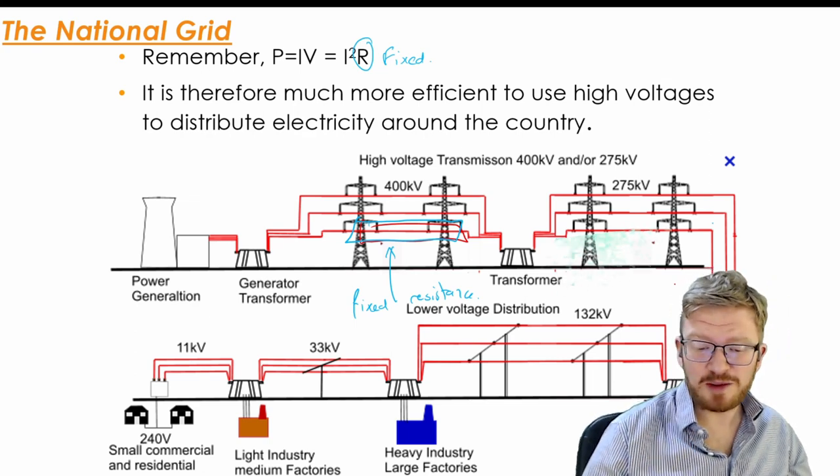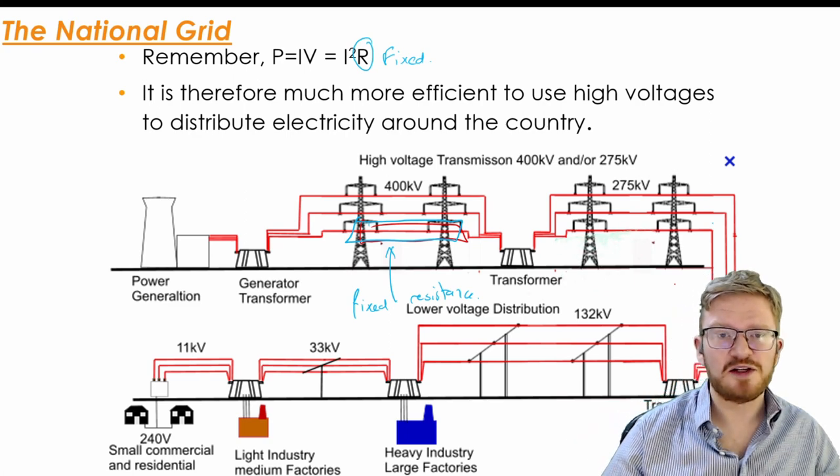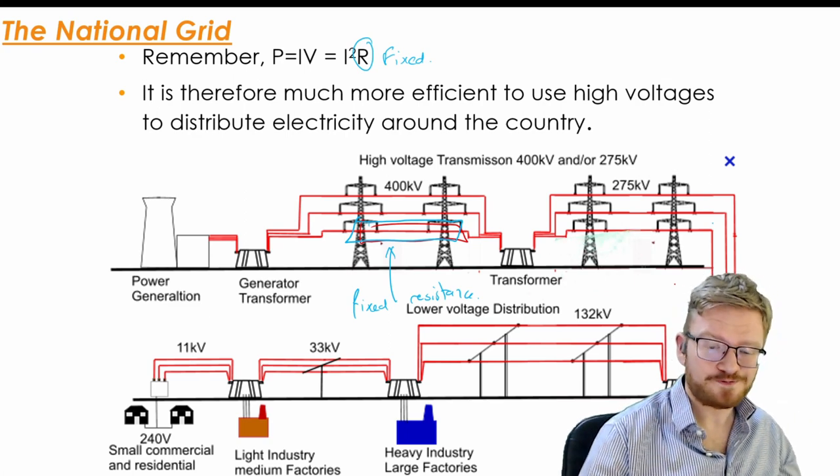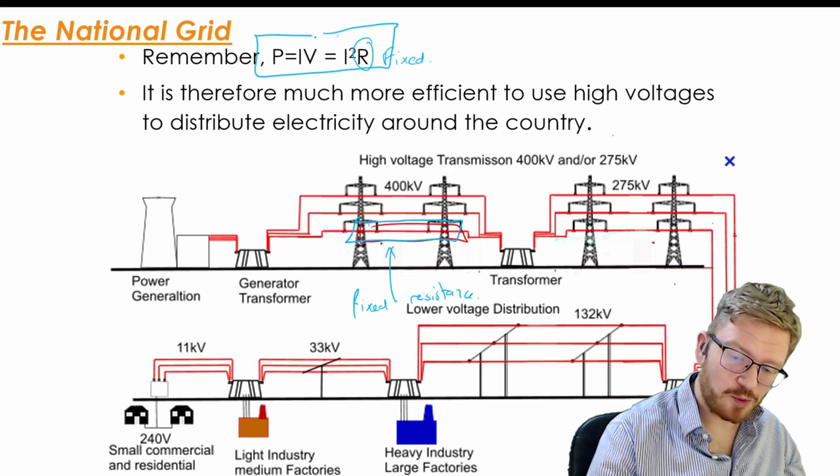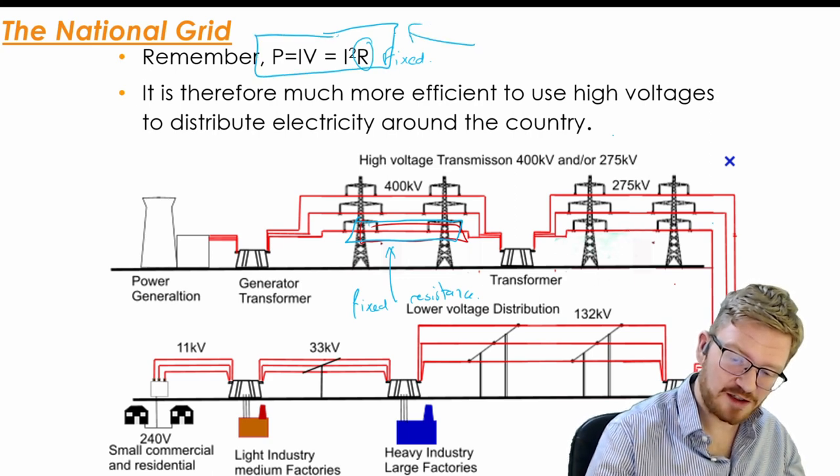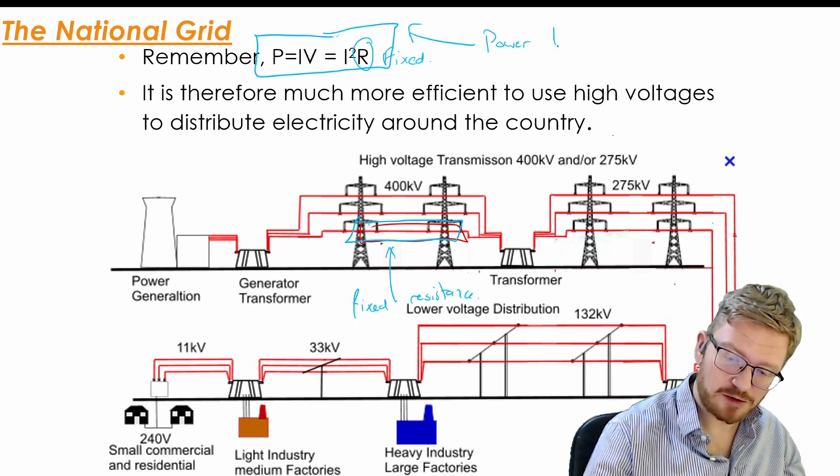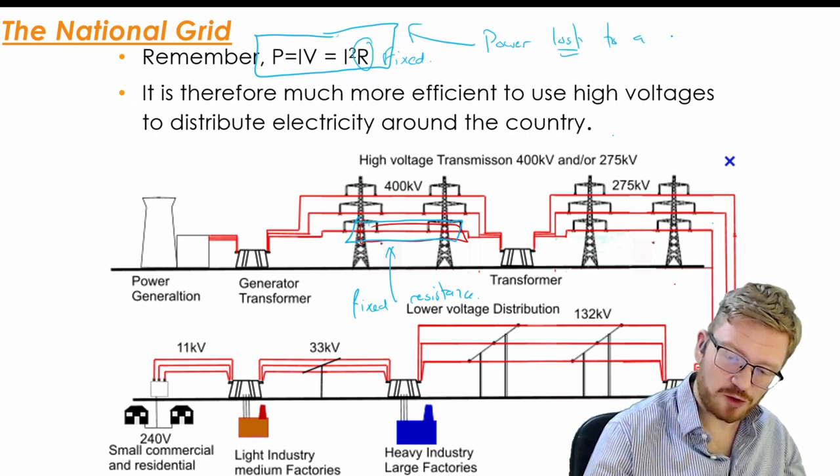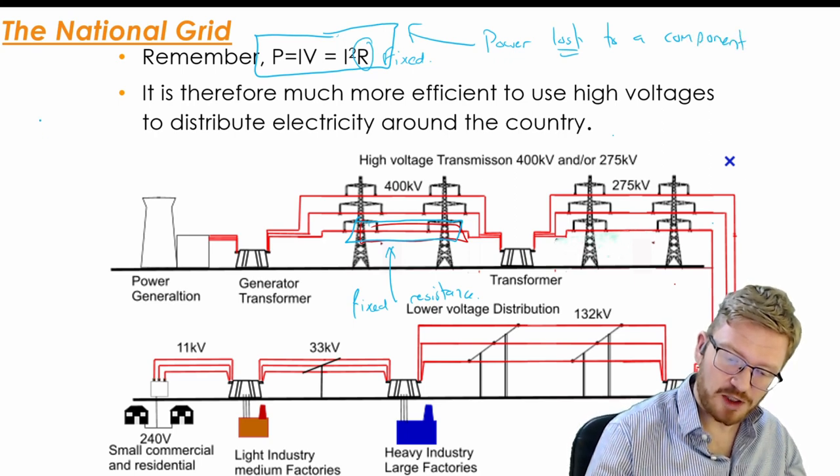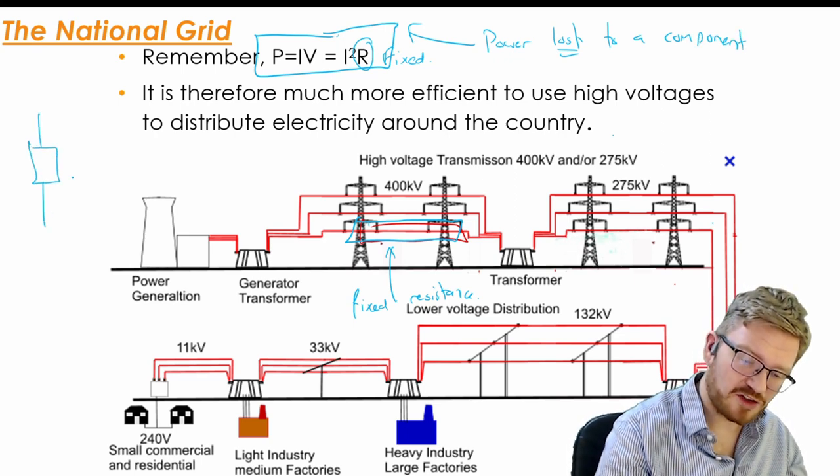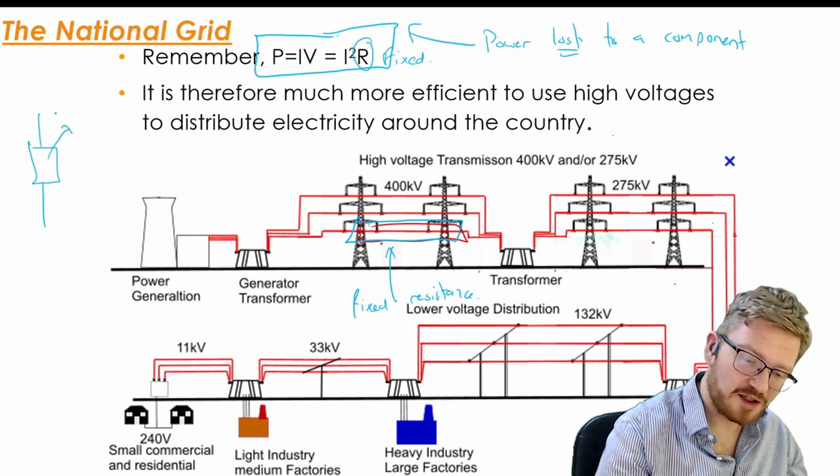Just a little side note there. Sometimes people get confused about this because they think, well, how then will I transfer power? So it's important to remember that what this equation is saying, P is IV, this is the power lost to a component. So in other words, if I have a resistor like this, I'm saying that the power out from this resistor is IV.